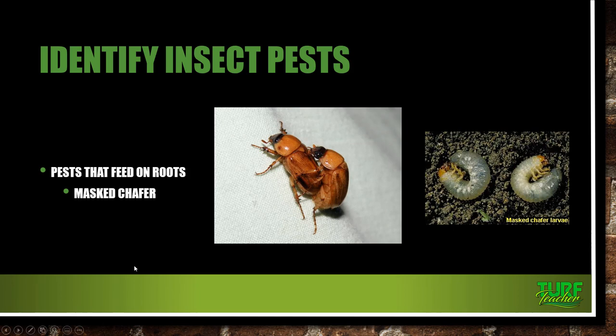The masked chafer — turf heavily infested with masked chafers shows drought stress. You will see dead patches that are not going to recover with water applications. Irrigation is not going to do anything for it. Wildlife will often dig around the dead patches, and moles sometimes tunnel where grub populations are high because they're eating these insects. The turf is going to feel spongy and will lift easily. The adults are often mistaken for May or June beetles. The adult beetles emerge from the turf mid-June to mid-July.